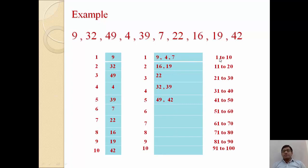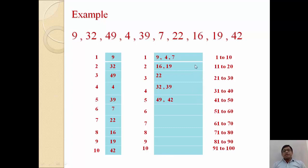Every bucket has some range. For example, suppose we have different buckets with ranges: bucket 1 is 1 to 10, bucket 2 is 11 to 20, bucket 3 is 21 to 30, bucket 4 is 31 to 40, bucket 5 is 41 to 50, and so on. If a number is between 1 and 10 — for example 4 — it must be stored in the first bucket. Any element between 11 and 20 is stored in the second bucket. Every bucket has a range and based on that range we store elements inside.